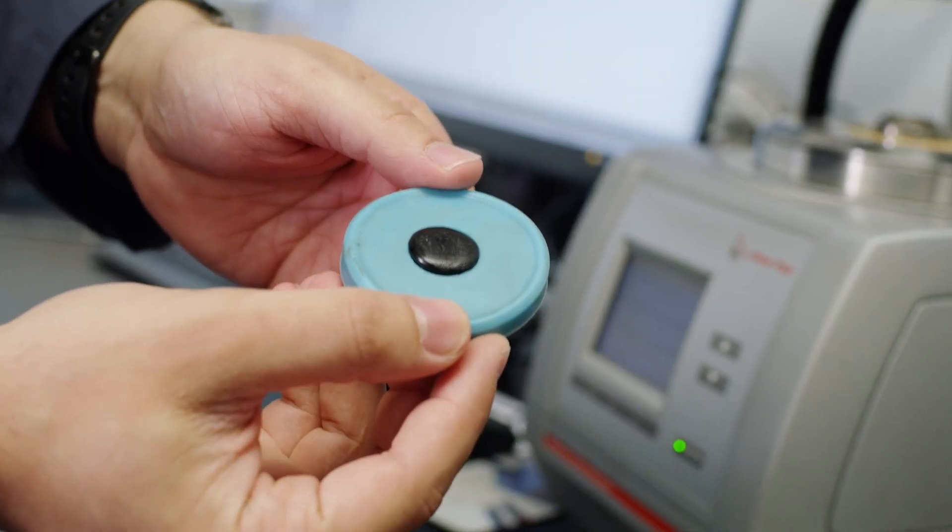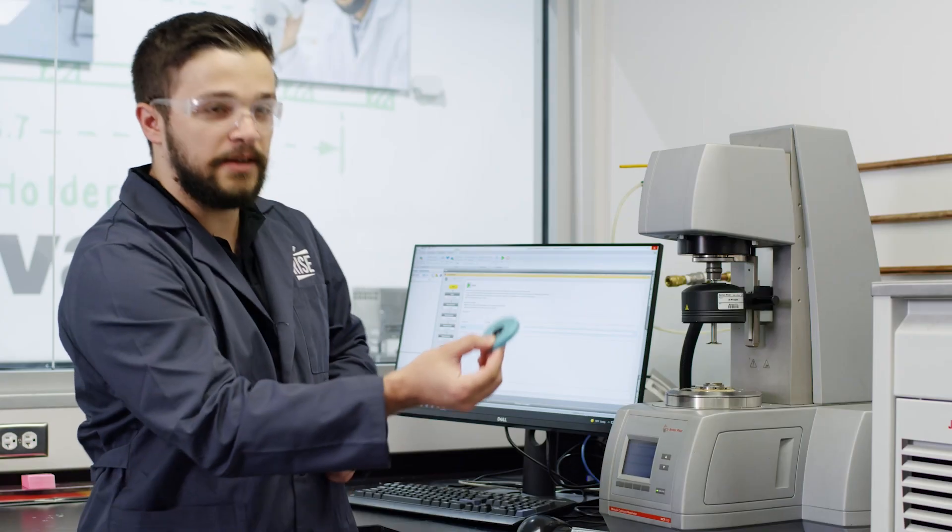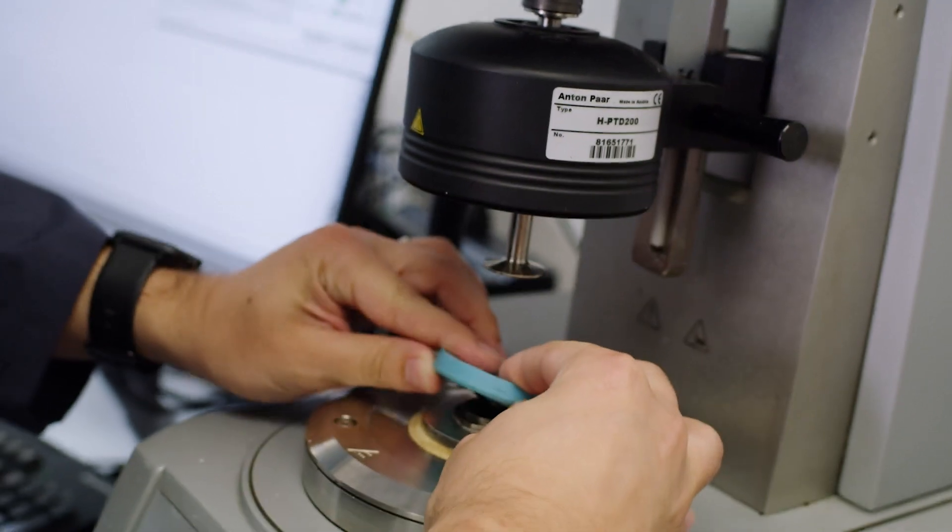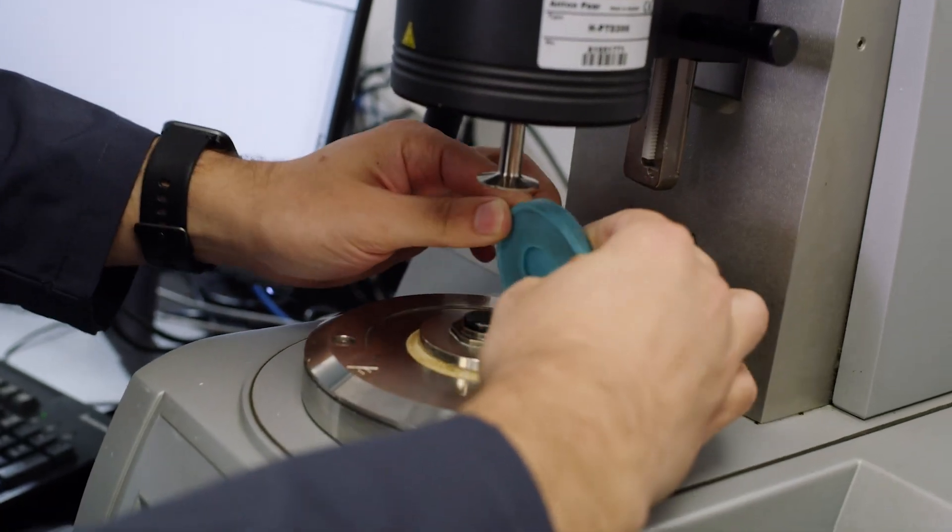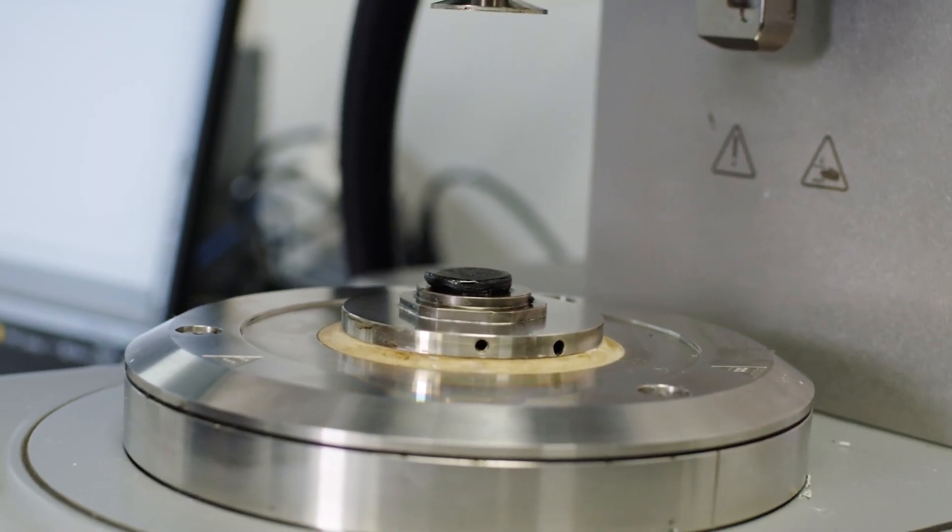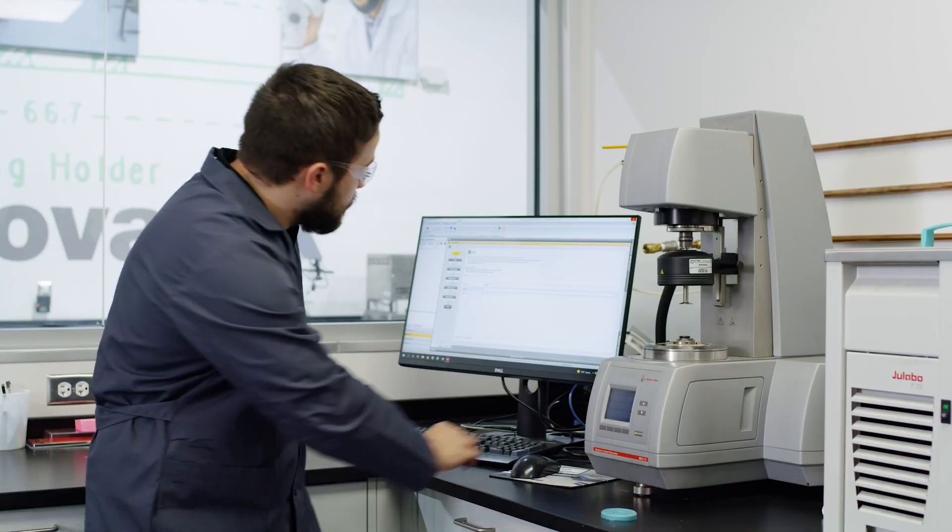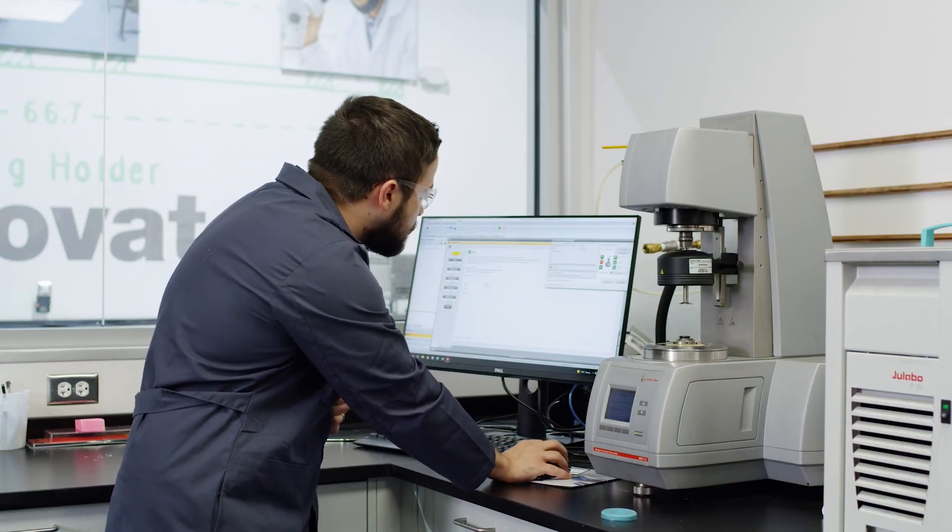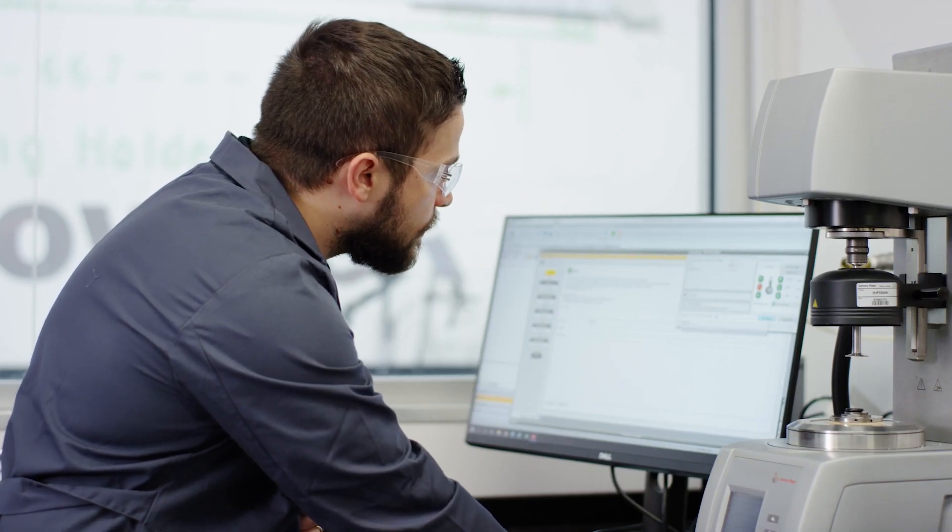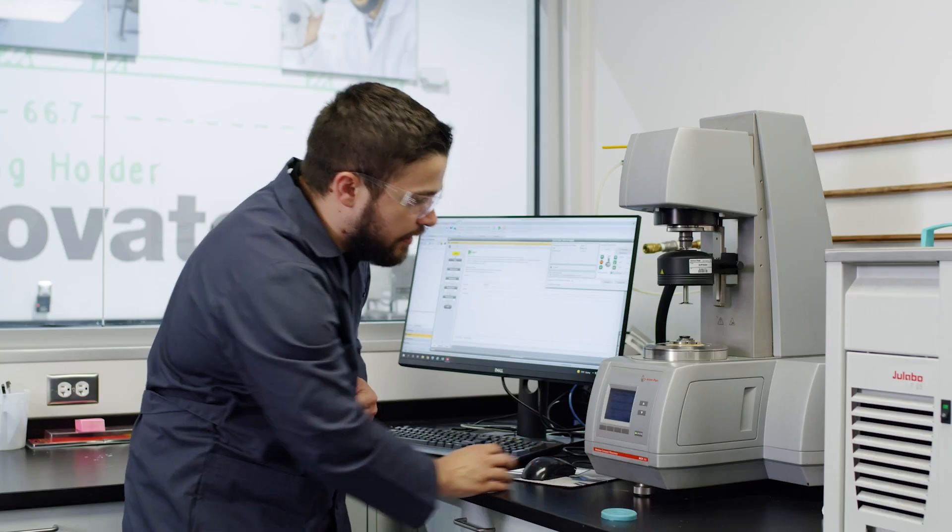We load our samples in these molds and pour hot bitumen into them. Then we set it into the DSR here, press it down, and make sure it's centered. We raise the temperature to about 90°C and let it heat up.